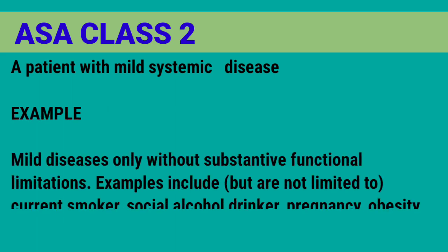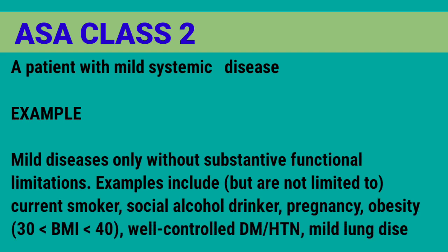ASA Class 2 is a patient with mild systemic disease with only mild diseases without substantive functional limitations. Examples include current smoker, social alcohol drinker, pregnancy, obesity with BMI 30-40, well-controlled diabetes mellitus or hypertension, and mild lung disease.